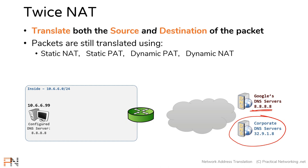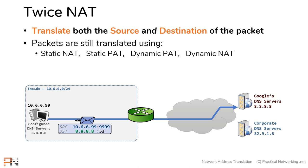One option is to go to every single client and reconfigure the DNS server to use your corporate DNS server IP address. But if you have hundreds of clients, that might take forever. Instead, what you can do is translate the packet so that if the source is your internal network and the destination is Google's DNS server, translate it so it instead goes to your corporate DNS server.